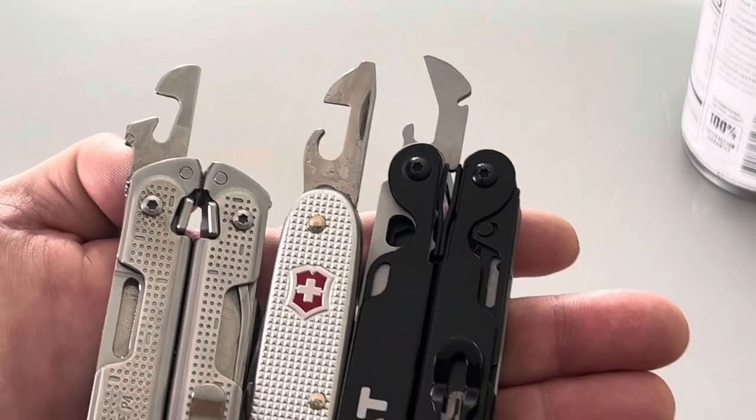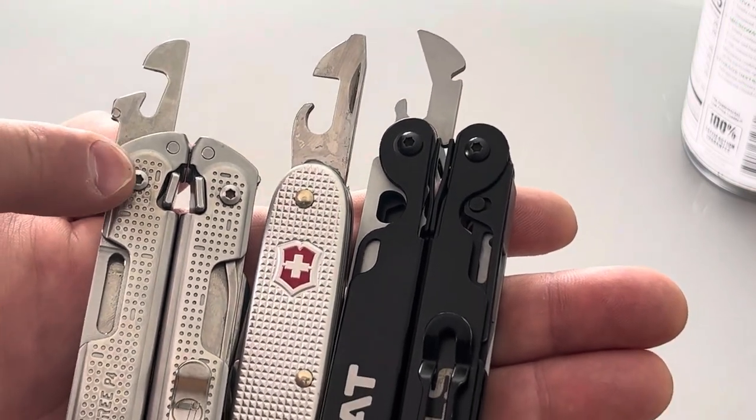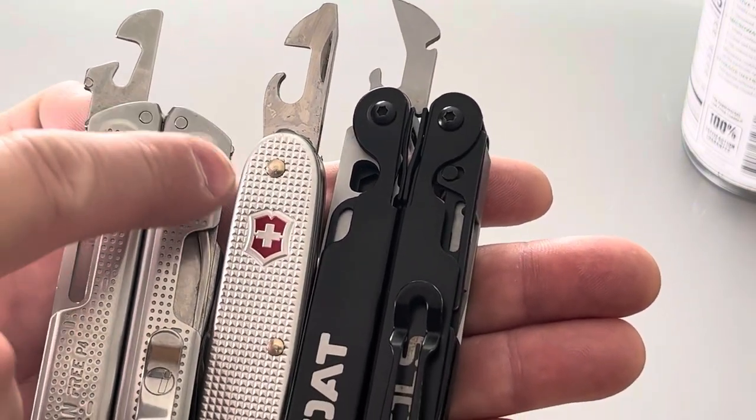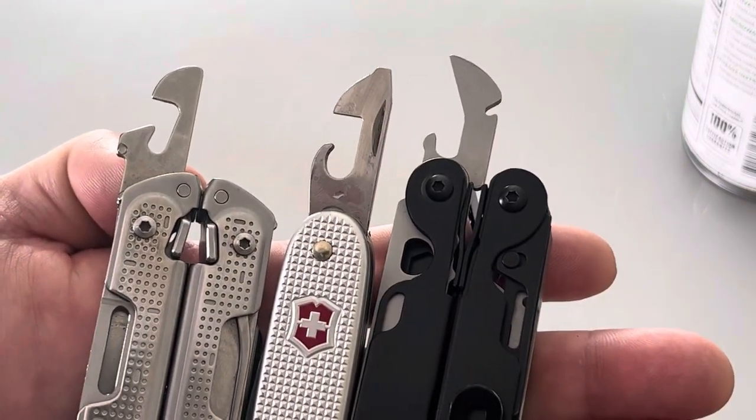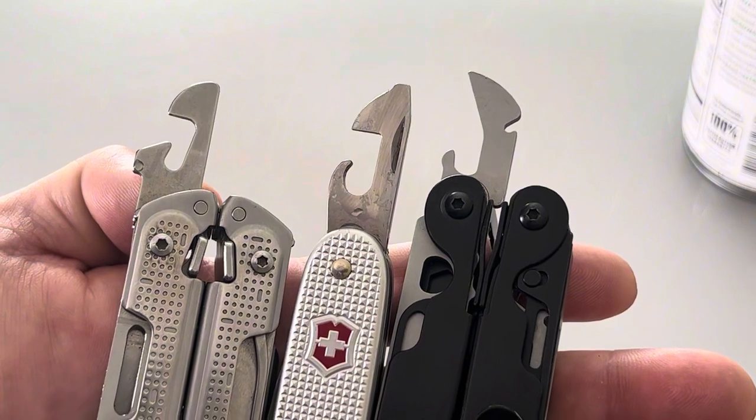This is the order that worked best for me. Number one was the Leatherman Free P4, then the Victorinox Pioneer Alox, then the Goat multi-tool. Which one is your favorite can opener?